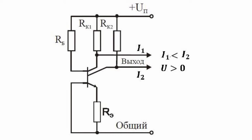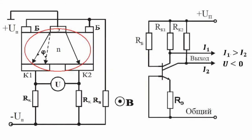If the direction of the magnetic field is altered, the current of collector 2 drops, and the current of collector 1 increases, which changes the sign of the voltage between the two collectors.